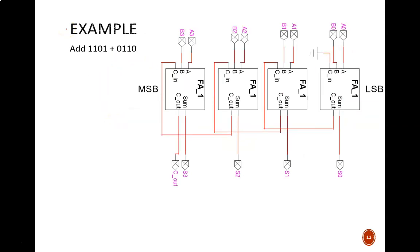So what would a numeric example look like? Given the problem 1101 plus 0110, we first need to assign the given values to the appropriate input ports. Assuming that a is the first number, then a3 is 1, a2 is 1, a1 is 0, and a0 is 1. Similarly, you can see how the b values are assigned 0, 1, 1, 0.